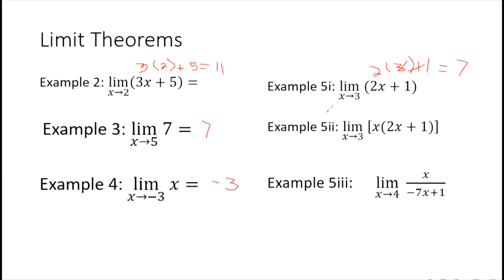Next, example 5ii: we have the limit of the product of two functions — x times the quantity 2x plus 1 — where x is approaching 3. We know that x approaching 3 gives us 3, and from example 5i, 2x plus 1 equals 7. So 3 times 7 is 21. The limit is 21.